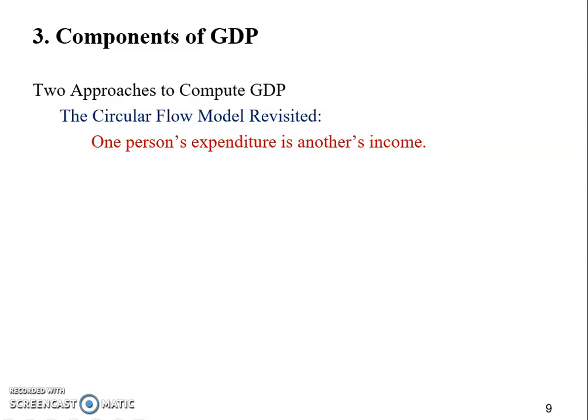For example, if I spend one dollar purchasing a bottle of water from Mary, who is the owner of the grocery store, then in this transaction it's going to be my expenditure because I spend one dollar, and it will be Mary's income. So here, one person's expenditure always equals another's income.